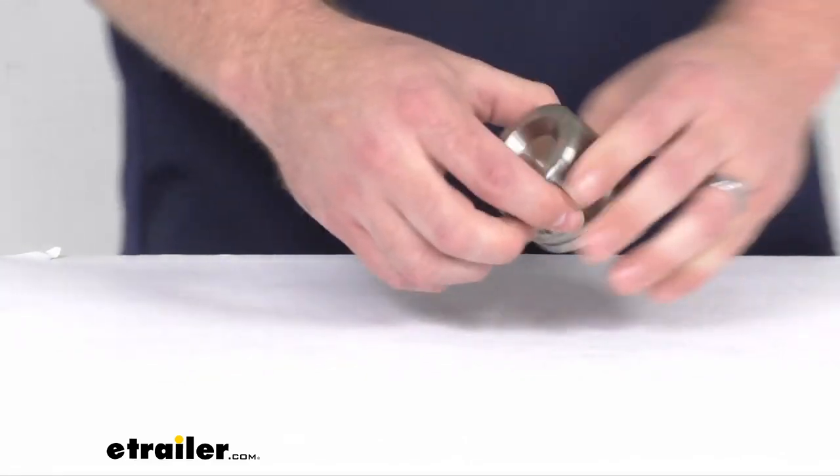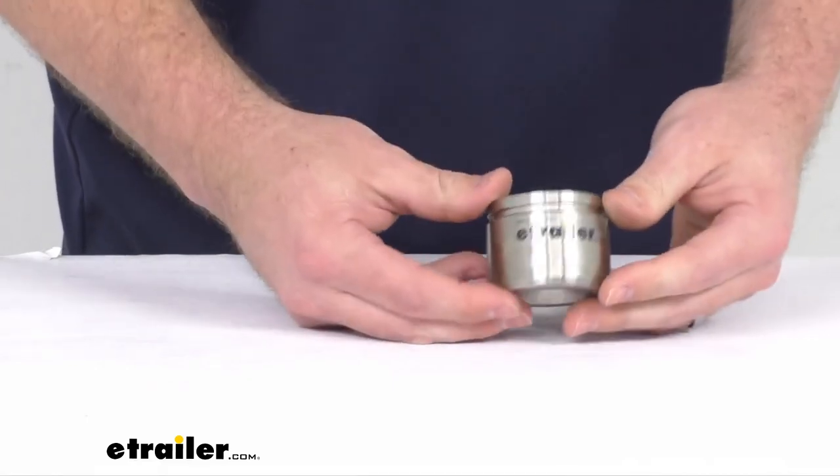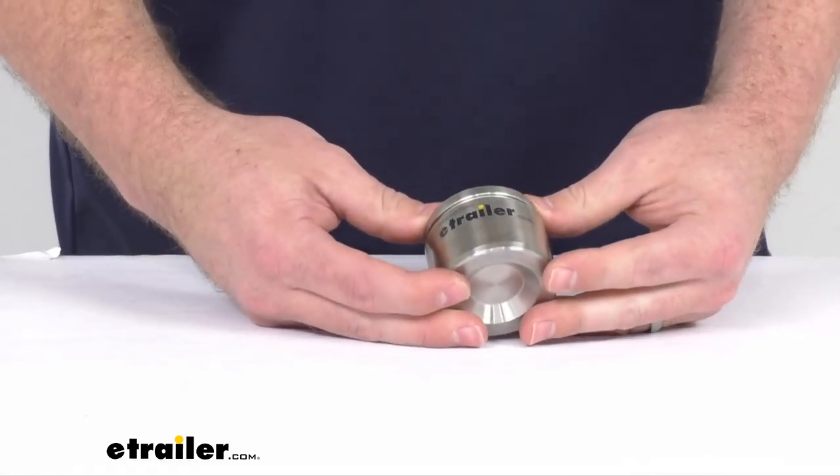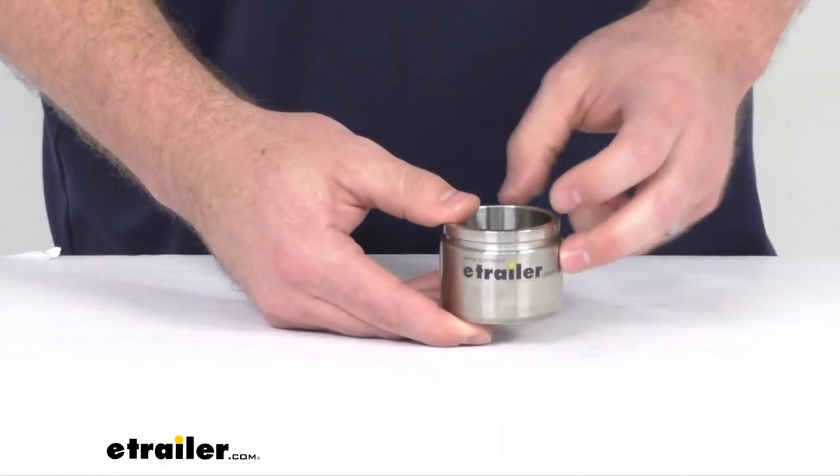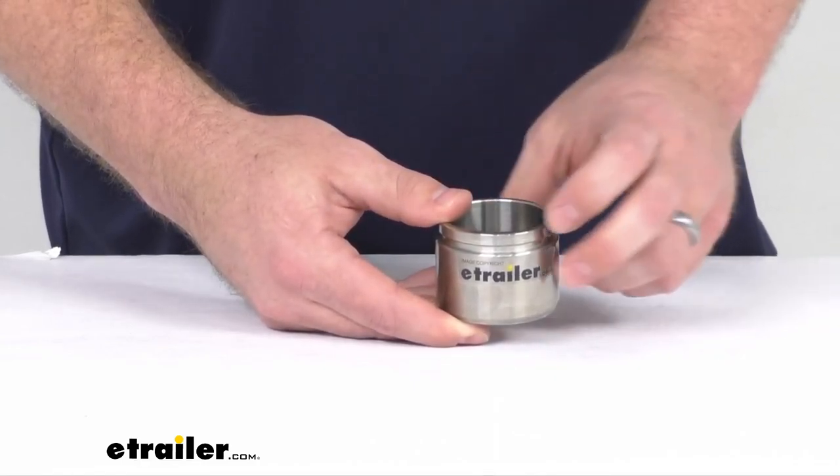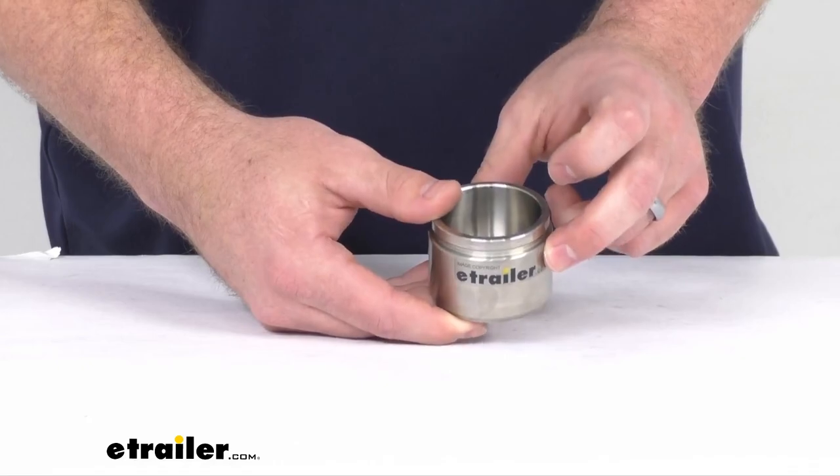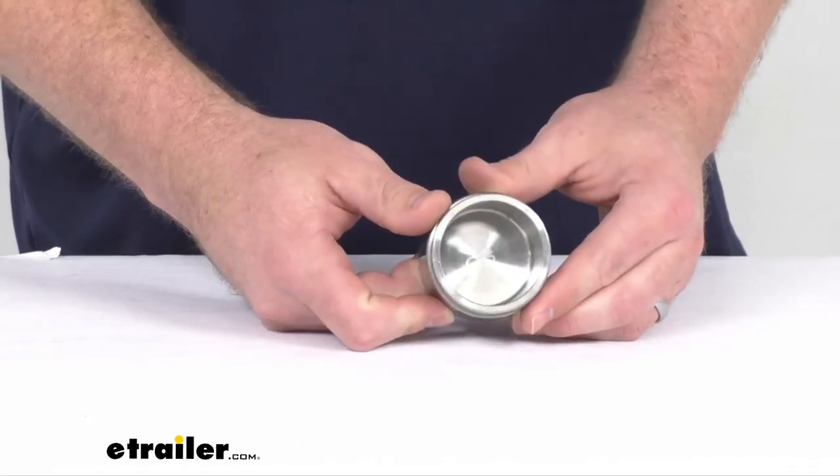You can trust it is going to fit without any fit issues or compatibility problems. This will fit with your brake caliper models with a 3,500 pound to 6,000 pound axle capacity.